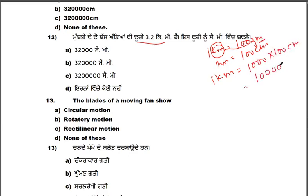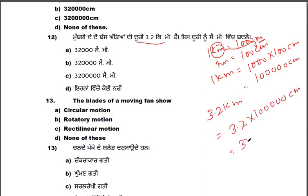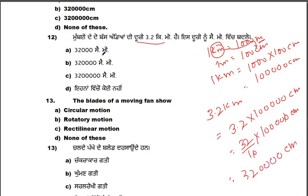To convert 3.2 km to centimeters: 1 km = 1000 × 100 cm = 100,000 cm. So 3.2 km = 3.2 × 100,000 = 320,000 cm. The answer is B, that is 320,000 cm.